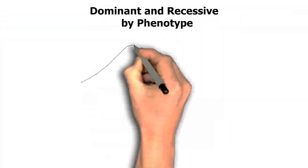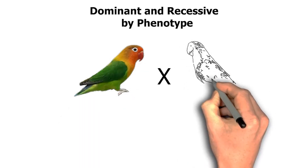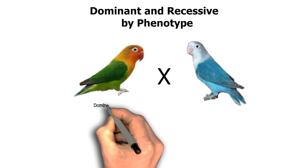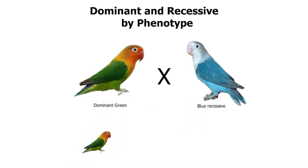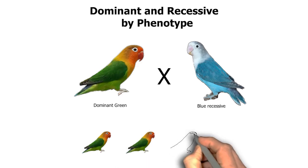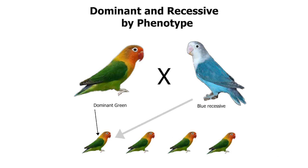We all know that the green bird is a dominant bird. If we breed a green bird with a blue bird, in the offspring you will get all green birds split blue, because green is dominant — so birds will carry the dominant gene first. But these chicks are also carrying the recessive gene, meaning next time if you breed these chicks with any recessive